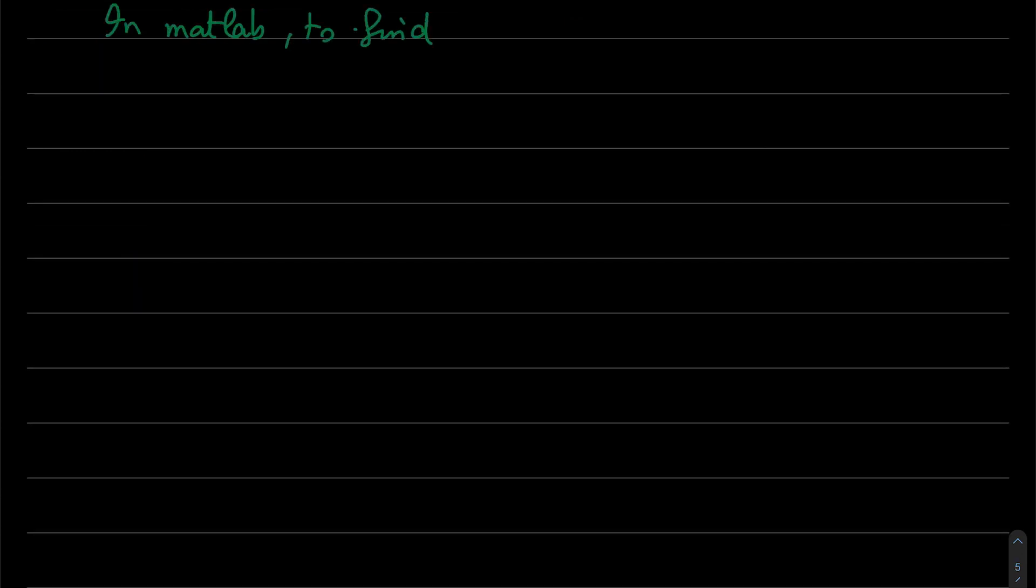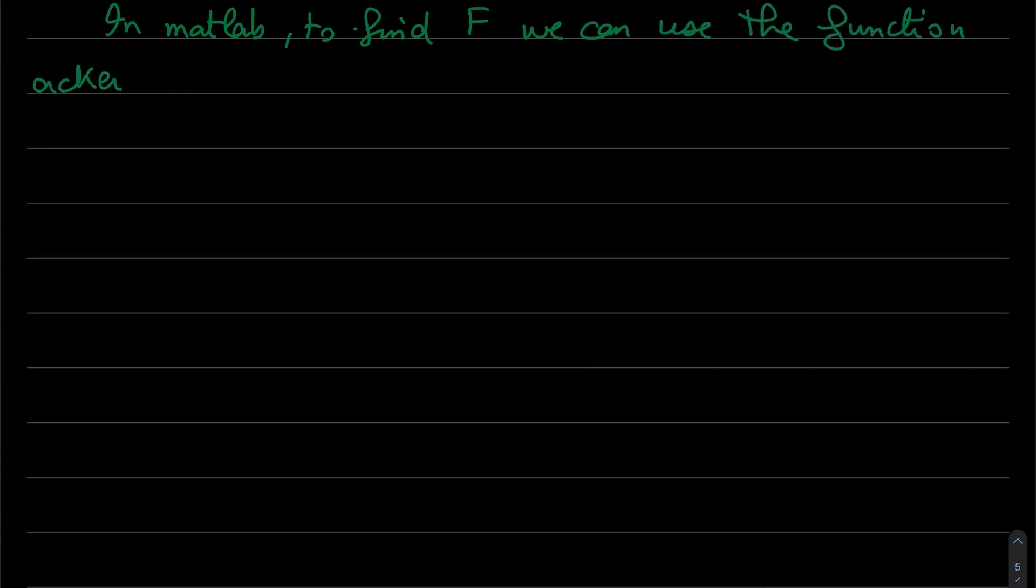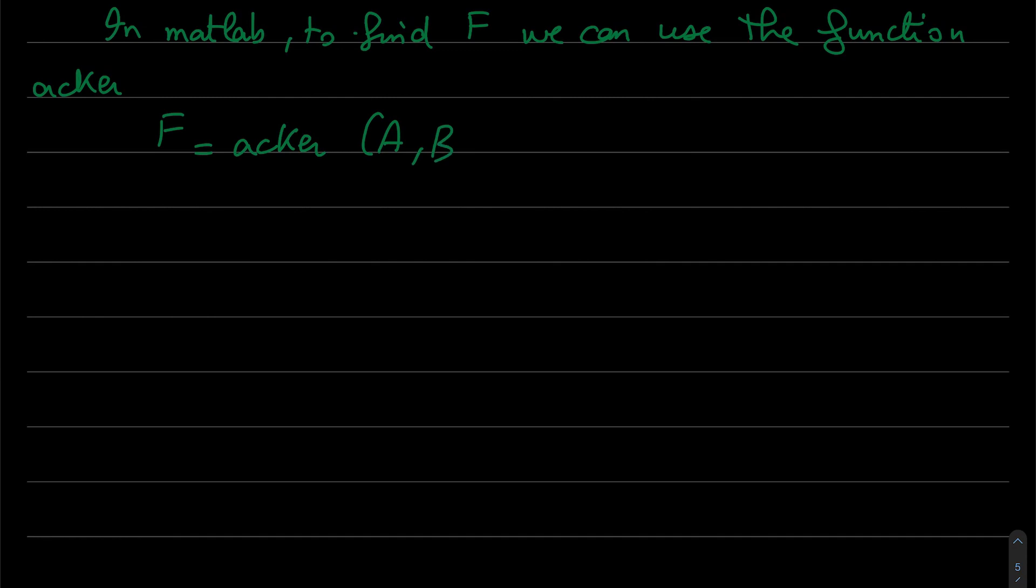In MATLAB, we can find f using the function acker, given the desired poles. So acker a, b and poles where poles are the desired poles in closed loop.